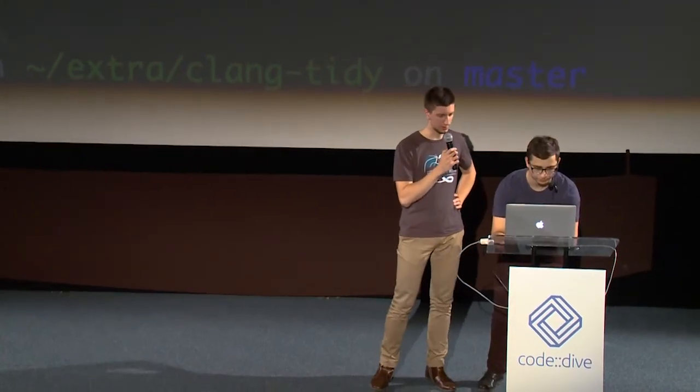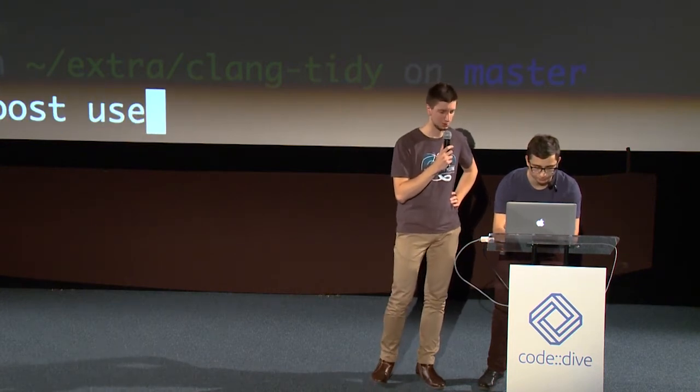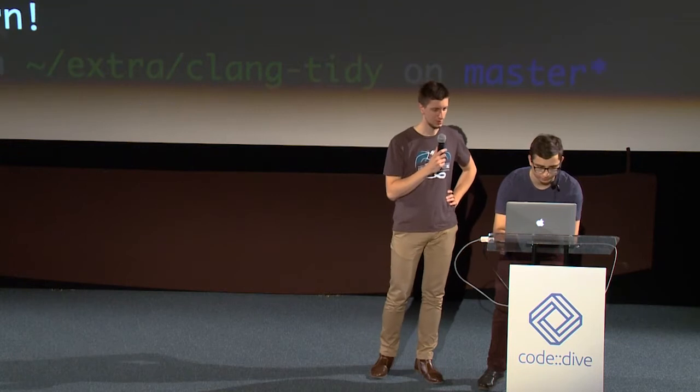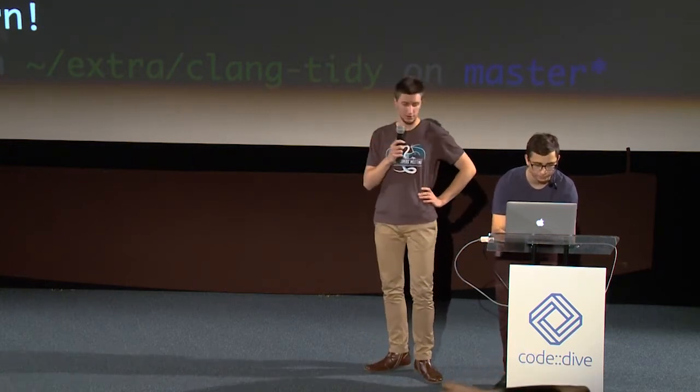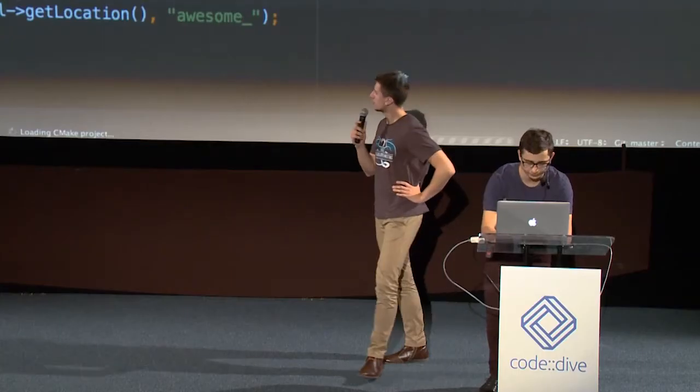The tool takes a module name and a check name - we'll name it 'boost' and 'use-auto'. It generates a bunch of stuff. Let's look at the implementation - the check is very simple. This is example code. The script creates all files and creates an example check that's already working.